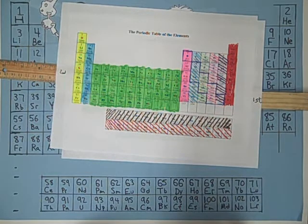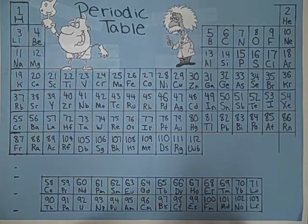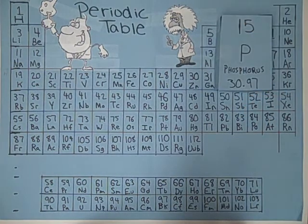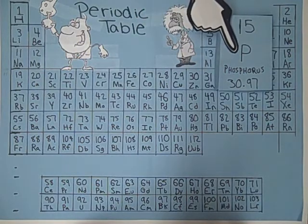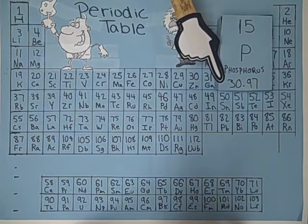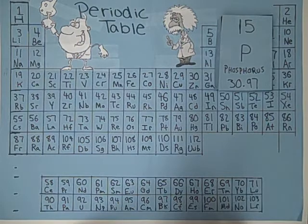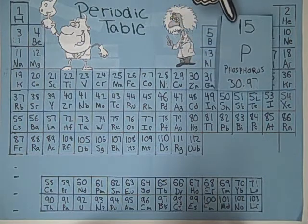Now that you know about periods and groups, let's break down the table into specific elements. First, the atomic number specifies the amount of protons and electrons. Second, the element symbol — for example, phosphorus. Third, is the atomic mass, which is the weight made up of neutrons and protons. To find the amount of neutrons, take the atomic mass and subtract the atomic number from it.